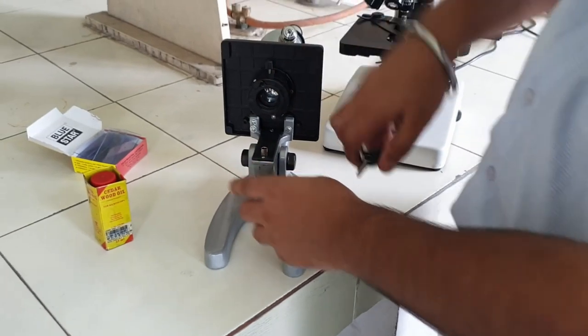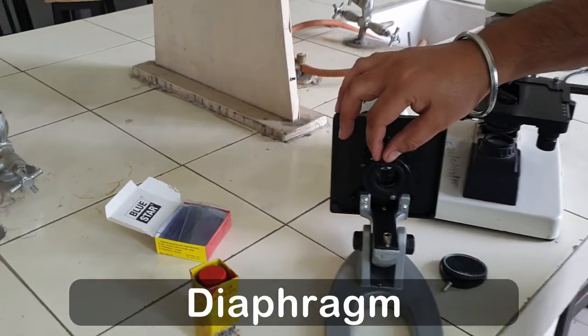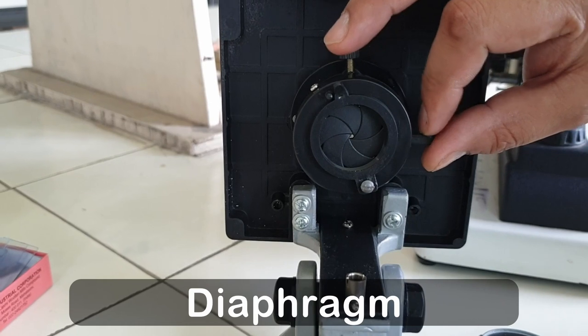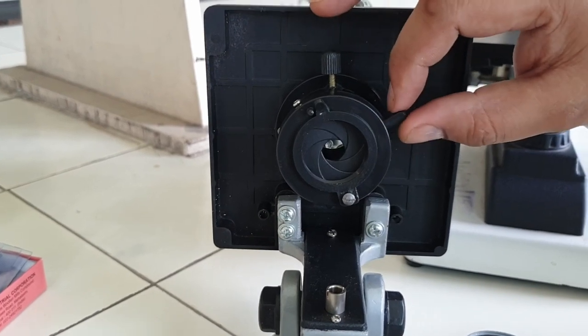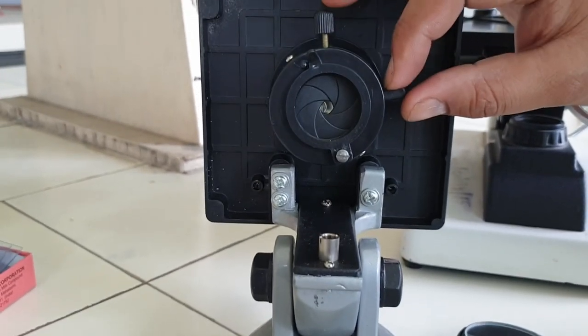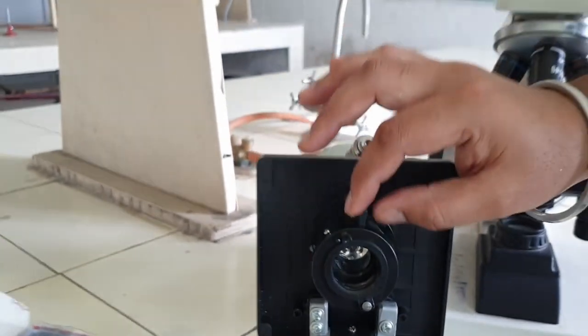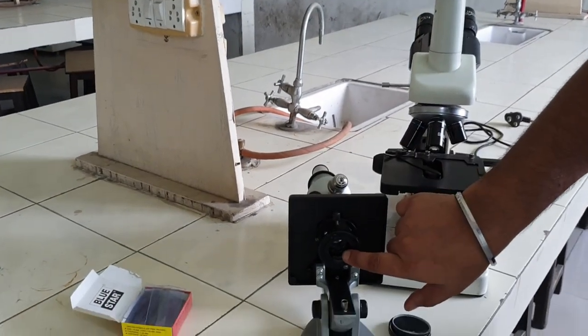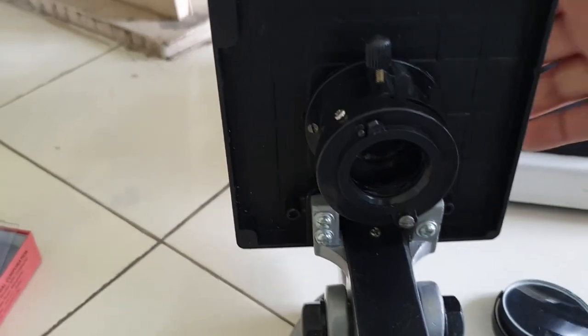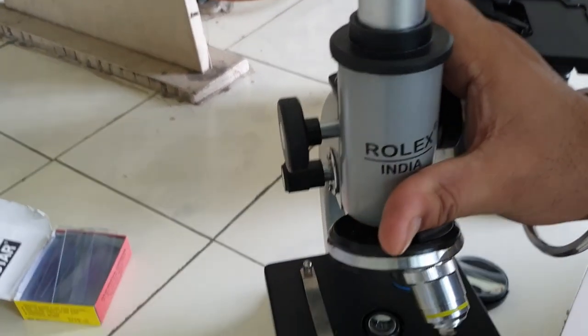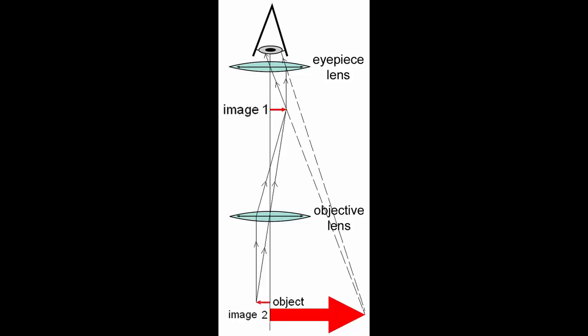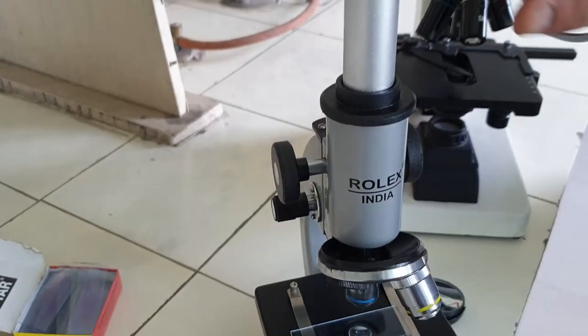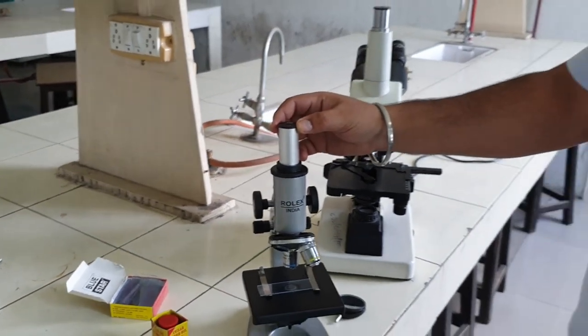After this, we have a diaphragm. The diaphragm controls how much light has to come inside. We can control the brightness from our slide. After this, we have a condenser lens. It is placed in front and is also visible. The condenser's work is that the light waves come down and the object is focused on the slide. After that, the light beam goes through the objective lens and then it goes through the eyepiece.